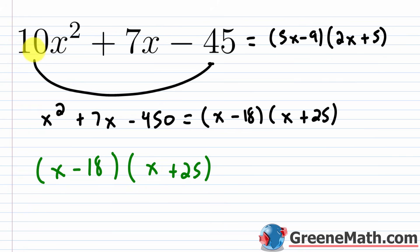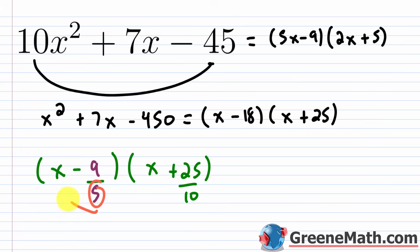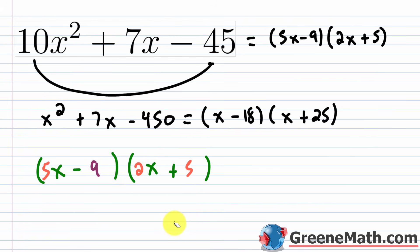Now divide each constant by the original a value, 10. For 18/10: reduce by 2 to get 9/5 — denominator is not 1, so slide the 5 out front, giving (5x − 9). For 25/10: reduce by 5 to get 5/2 — denominator is not 1, so slide the 2 out front, giving (2x + 5). The final factorization is (5x − 9)(2x + 5), confirming the method works.